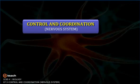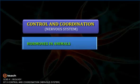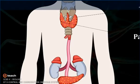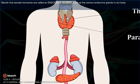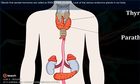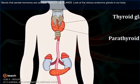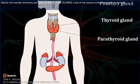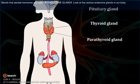Control and Coordination. Let us study hormones in animals. Glands that secrete hormones are called endocrine glands. Look at the various endocrine glands in our body.